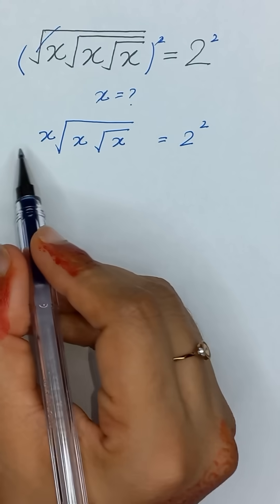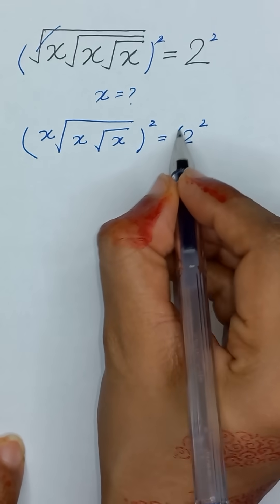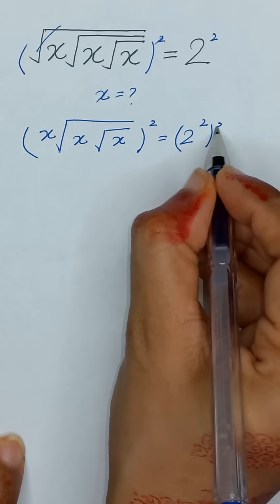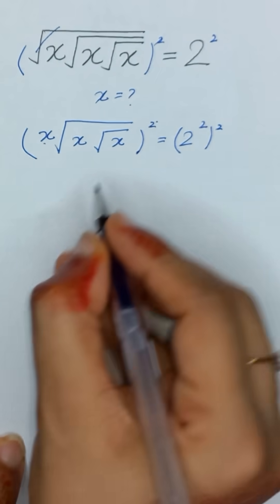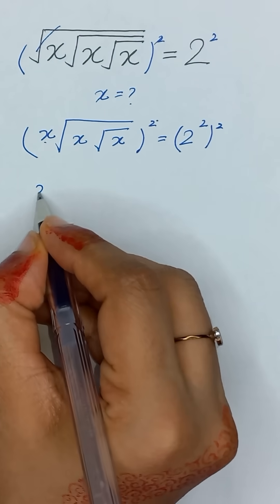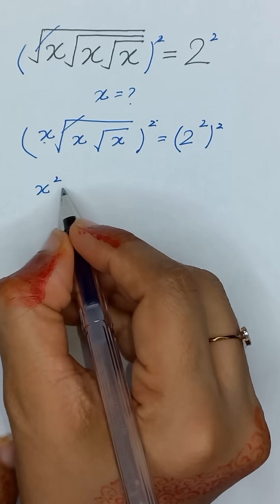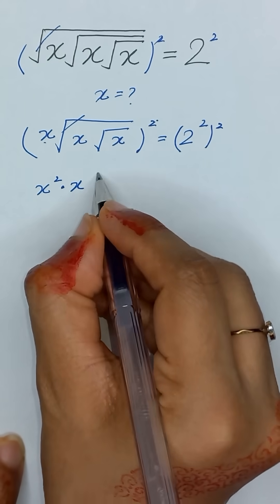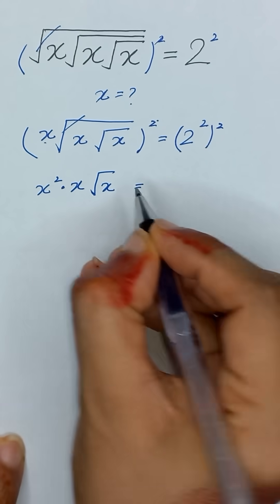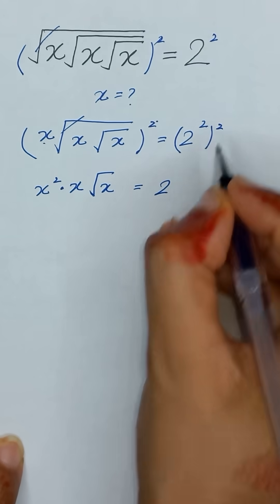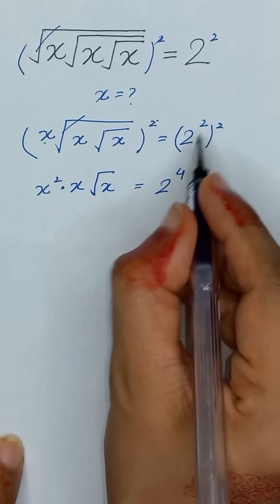Now we will again apply square on both sides, so this x to the power 2 will become x squared, and this square and square root will be cancelled out, and it will become x and this square root of x is equal to 2 to the power 2, which is 2 times 2 equals 4.